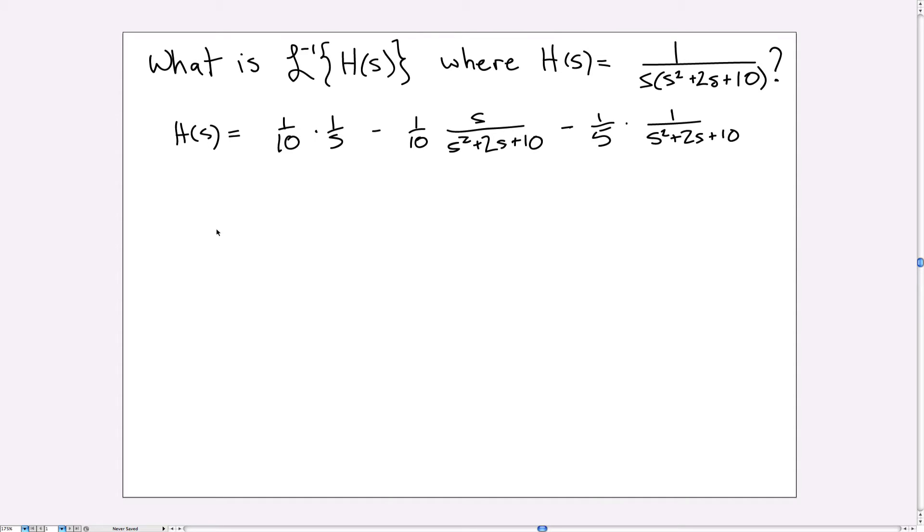So let's sort out exactly what we need. The transform of a function like e to the at cosine bt, the transform of this guy is s minus a over s minus a squared plus b squared. And you'll notice neither of these are quite in that form, but they're not far off. So to fix it up, we need to complete the square in the denominator and turn it into an expression like this.